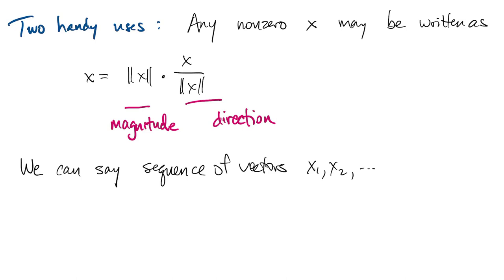The other thing we'll want to be able to do in the future is to say that if we have a sequence of vectors, it converges to a limit if the norm of the difference goes to zero. So that's a limit in the usual sense.